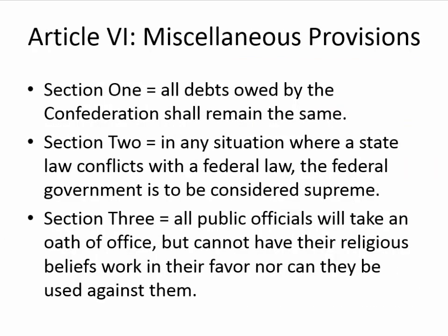Article 6 addresses miscellaneous issues. Section 1: all debts owed by the Confederation remain the same — no reneging on debts owed to other countries. Section 2: in any situation where a state law conflicts with federal law, the federal government is considered supreme — establishing federal supremacy. Section 3: all public officials will take an oath of office, but their religious beliefs cannot work in their favor nor can they be used against them — a preview of the First Amendment's freedom of religion.